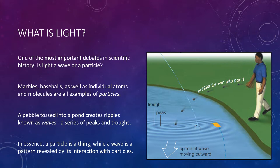Marbles, baseballs, and individual atoms and molecules are all examples of particles. A particle of matter can sit still or it can move from one place to another. In contrast, think about what happens when you toss a pebble into a pond, creating a set of outward moving ripples, or waves. These waves consist of peaks, where the water is higher than average, and troughs, where the water is lower than average. If you watch as the waves pass by a floating leaf, you'll see that the leaf rises up with each peak and drops down with each trough, but the leaf itself will not travel across the pond's surface. We conclude that even though the waves are moving outward, the particles or molecules that make up the water are moving primarily up and down. The waves carry energy outward but do not carry matter along with them. In essence, a particle is a thing, while a wave is a pattern revealed by its interaction with particles.